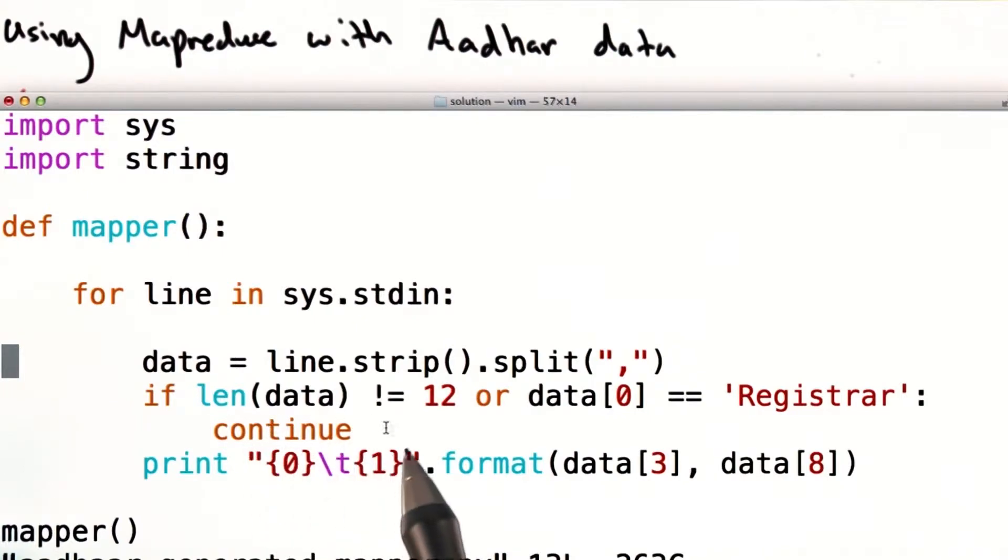If the length of the data array is not equal to 12, which is what we expect given our Aadhaar data, or the first entry is equal to registrar, which would indicate that this is the header row, we continue on to the next row.